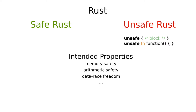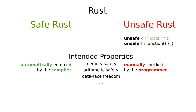Both sub-languages have to uphold the invariants of the Rust type system, such as that references are never dangling. These type invariants imply important safety properties of the Rust language such as memory safety, arithmetic safety, and data race freedom. The core difference is that in safe Rust, invariants are automatically enforced by the compiler, but safe Rust is more restrictive to be efficiently checkable. In unsafe Rust, the programmer is responsible for preserving the invariants, but also has access to lower-level operations that cannot be checked by the compiler.